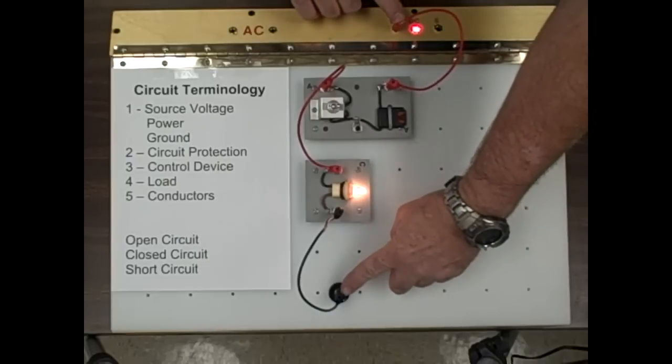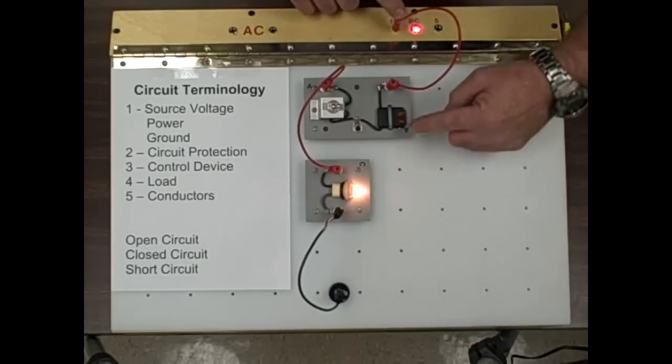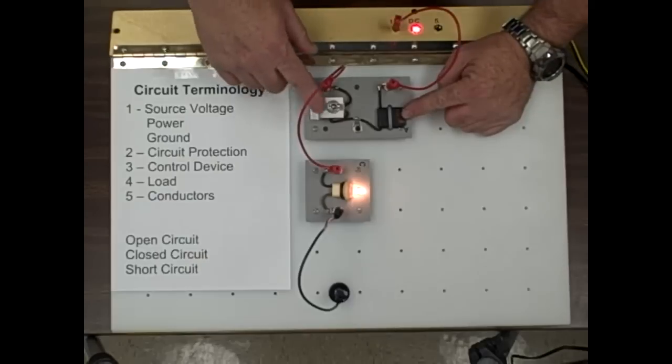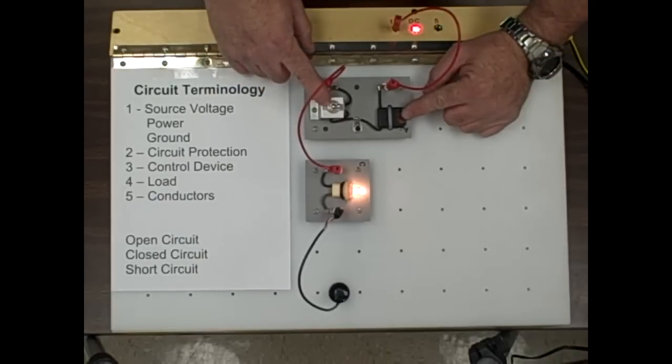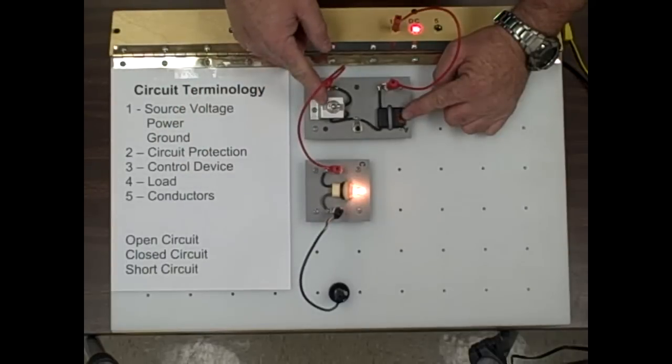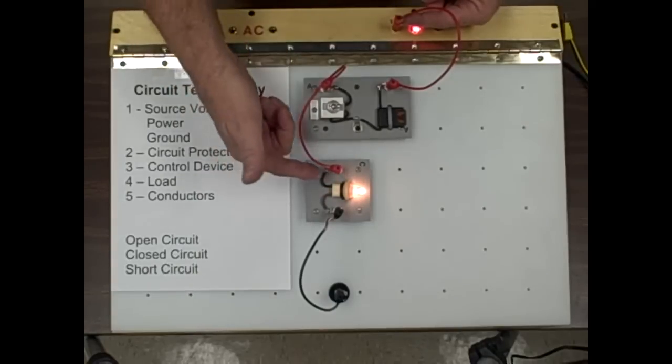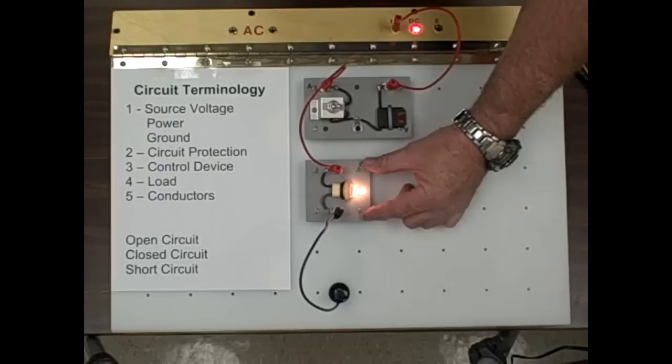We have our source voltage, a power and a ground, circuit protection first. In this case control device is here, we'll see in later videos the control device could be over here. In this situation we're going to call this a power controlled circuit because the control device is on the power side which is this side. Then we come through a load in this case a marker light, this could also represent a motor or a starter motor,